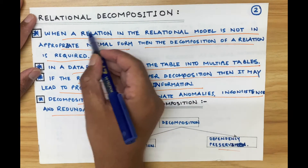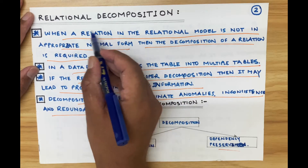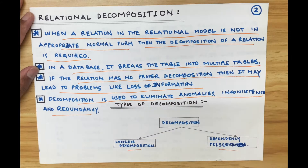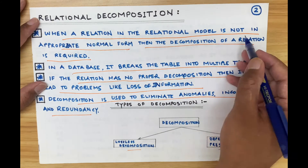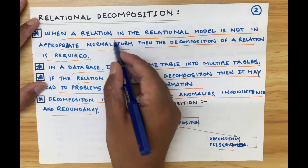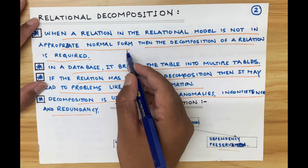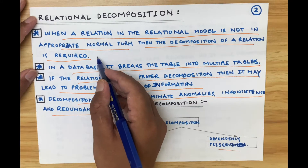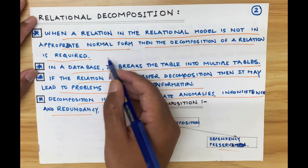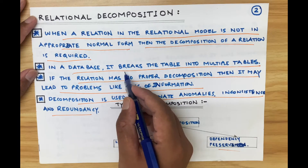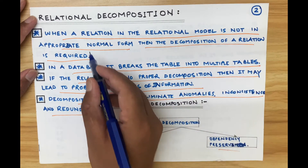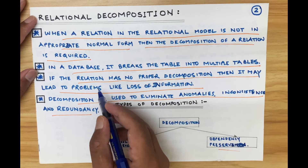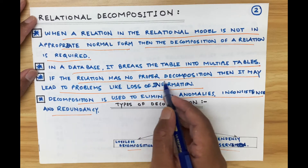Relational decomposition — what is it? When a relation, that is a table in the relational model, is not in an appropriate normal form, meaning there is some redundancy present in that table, then decomposition of the relation is required. We decompose the table to reduce it to normal form by breaking it into multiple tables.